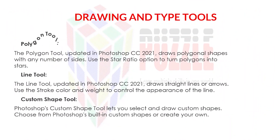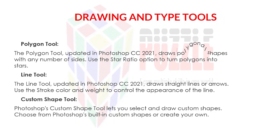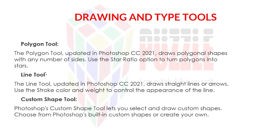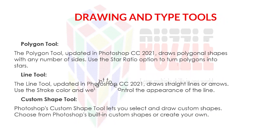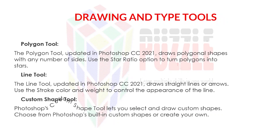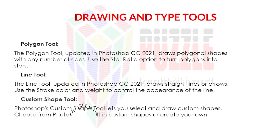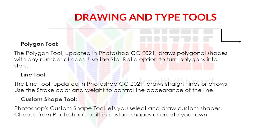Polygon tool, updated in Photoshop CC 2021: draws polygonal shapes with any number of sides — use the star ratio option to turn polygons into stars. Line tool, updated in Photoshop CC 2021: draws straight lines or arrows — use the stroke color and weight to control the appearance of the line. Custom shape tool: lets you select and draw custom shapes — choose from Photoshop's built-in custom shapes or create your own.